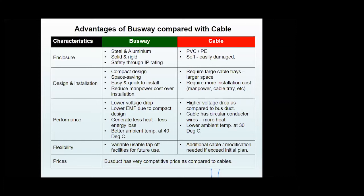Price-wise, busway in low ampere ratings is more expensive than cable in terms of material cost. However, when you compare busway and cable price, you need to consider the overall cost — material, installation cost, and support structure cost. Cables require more manpower and larger cable trays for higher ampere ratings, whereas busway only uses a C-channel and hanger rod. Overall, especially in high ampere ratings, busway prices are very competitive compared with cables.